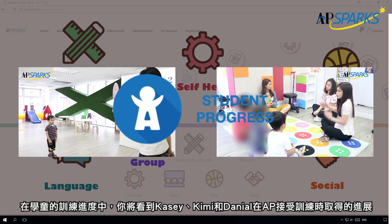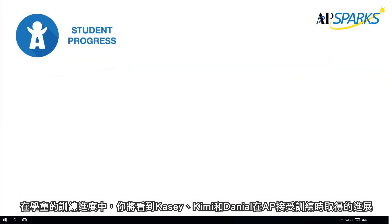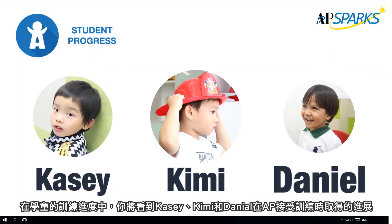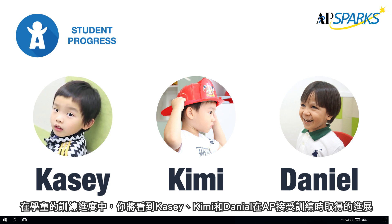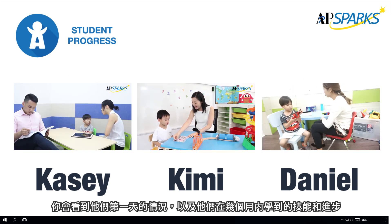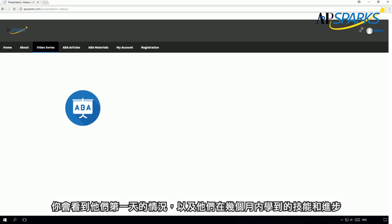In the student's progress section, you will see the progress made by three children — Casey, Kimi, and Daniel — in Autism Partnership. You will see their first day and the skills they have learned over many months.